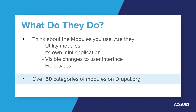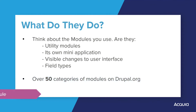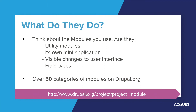In fact, Drupal.org already organizes modules into over 50 categories. Just to name a few: accessibility, e-commerce, education, file management, JavaScript utilities, email, multilingual, search, spam protection, and user access and authentication. You can view the full list of categories when searching for a module at drupal.org/project/project_module.